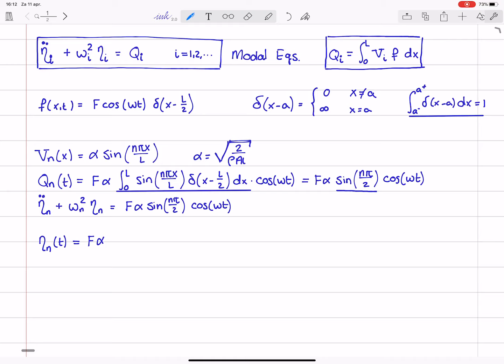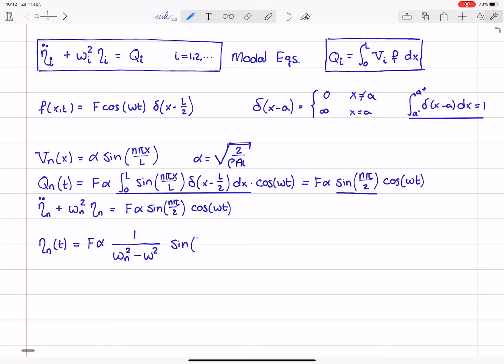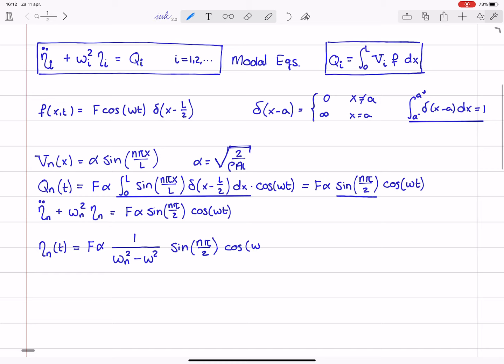It is f times alpha times omega n squared minus omega squared in the denominator, in the numerator is 1 then we have sine of n pi divided by 2 times the cosine of omega t.